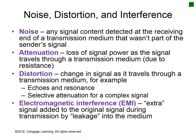Noise is any signal content detected at the receiving end of a transmission medium that wasn't part of the sender's signal. Attenuation is loss of signal power as the signal travels through a transmission medium due to resistance. Distortion is the change in signal as it travels through a transmission medium — for example, echoes and resonance, selective attenuation for a complex signal, and electromagnetic interference (EMI), which is extra signal added to the original signal during transmission by leakage into the medium. Note that these terms overlap: EMI is noise from the receiver's point of view. Loss of power equally across all parts of a complex signal is called attenuation, but it's also called distortion if it affects different parts of the signal by different amounts.